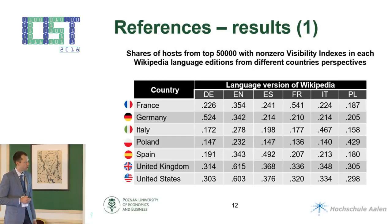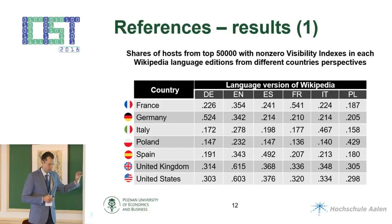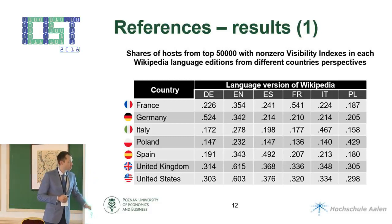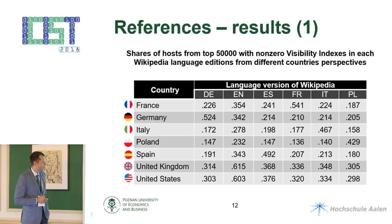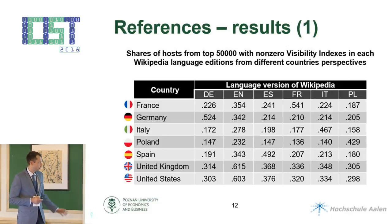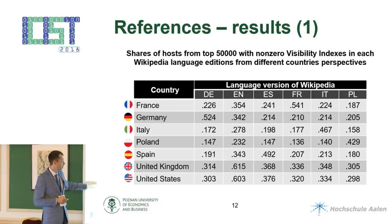This slide presents results of analyzing these hosts using the visibility index. We see that the bigger value is in the language version related to a specific country. For example, if we analyze hosts from the German version of Wikipedia, the visibility index from the German side has the highest value. Another example: from an Italian language perspective, the visibility index is highest in the local Italian language version.